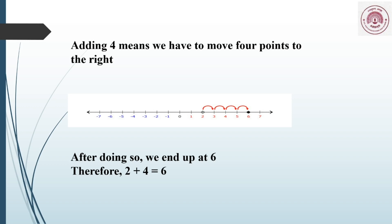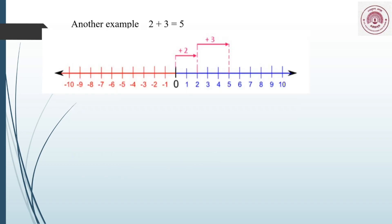Let's take another example: 2 plus 3. The first step is to locate the number 2 on the number line. We are adding a positive number.